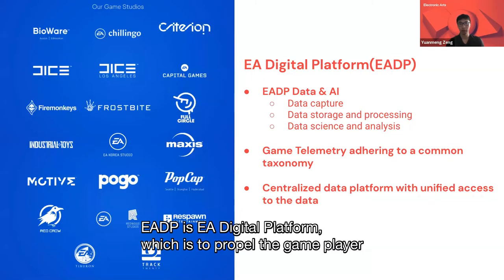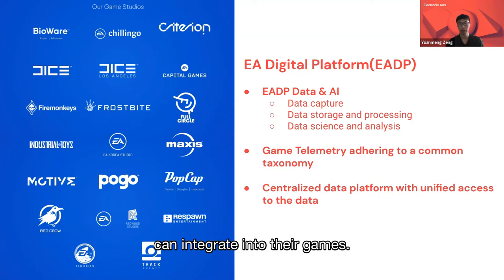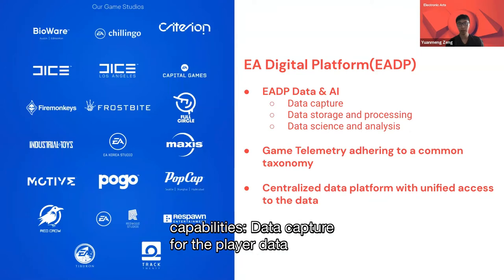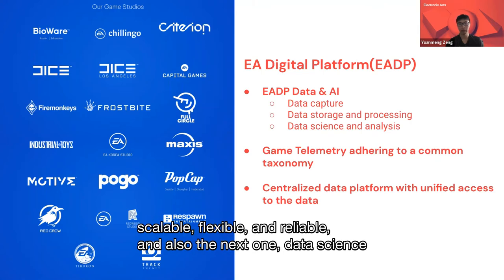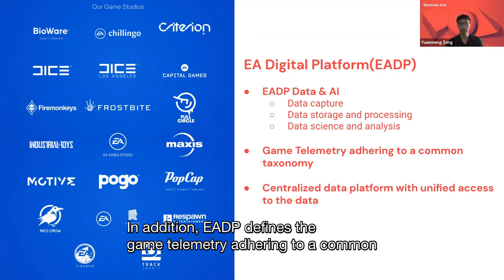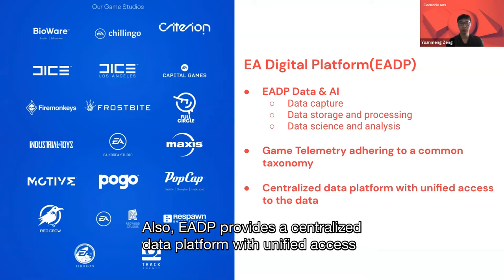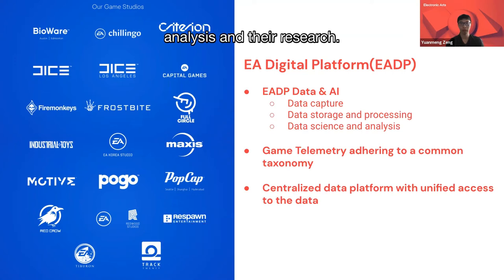EADP — EA Digital Platform — powers the game player network by providing reusable capabilities that game teams can integrate into their games. Our org provides three main capabilities: data capture for player data; data storage and processing that are horizontally scalable, flexible, and reliable; and data science and analysis on top of the data. EADP also defines game telemetry adhering to a common taxonomy so that various game teams can send player data in a common pattern, and provides a centralized data platform with unified access for game analyst teams.